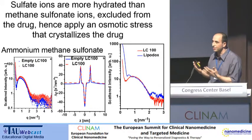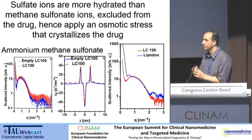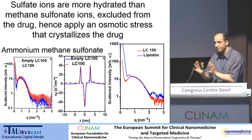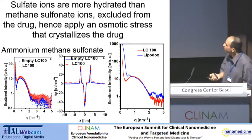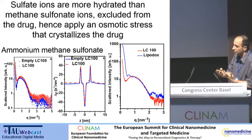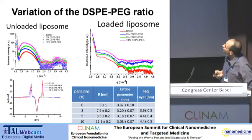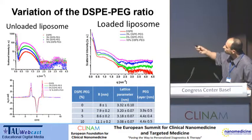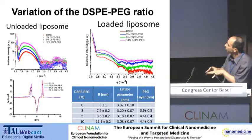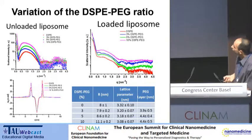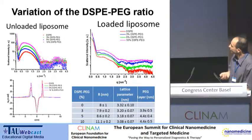This suggests that sulfate ions, being highly hydrated, are excluded from the drug and therefore apply osmotic stress to it — which is why sulfate ions produce crystals, while methane sulfate, being less hydrated, is incorporated and does not allow crystallization. You can also vary the PEG layer and see how the dimensions of the PEG layer and the drug inside are influenced by the amount of PEG.